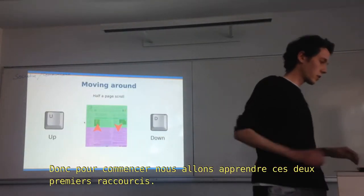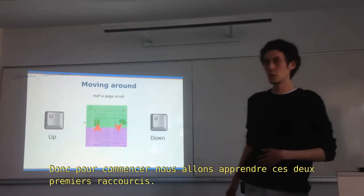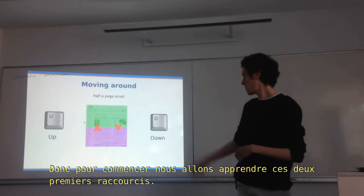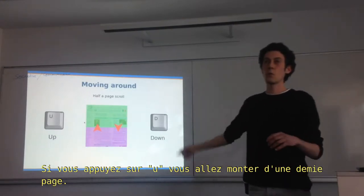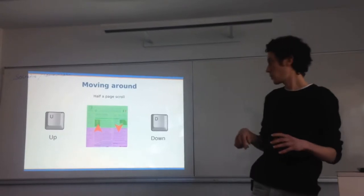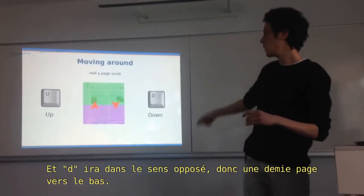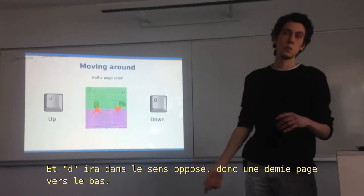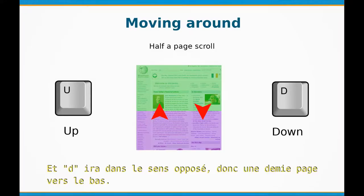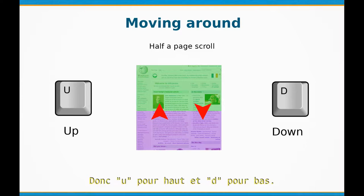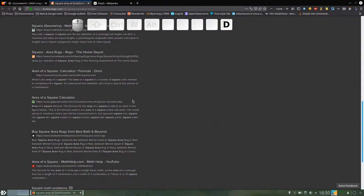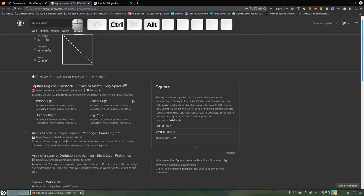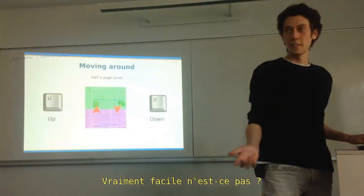So to get started, we're going to learn these two first keys. If you press U, you will go half a page down in a page, and D it's going to be the other way around. So U to go up and D to go down. Pretty easy, right?